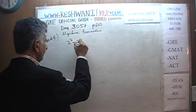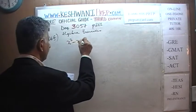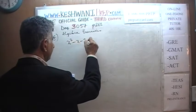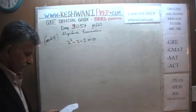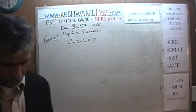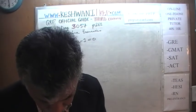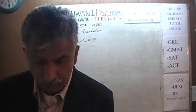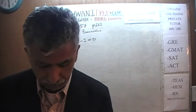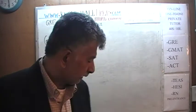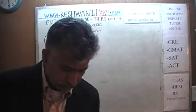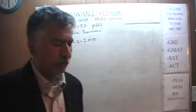Here is what is given to us: x squared minus x plus 1 is equal to 0. Our job is to find the solutions to this problem — it says solve the given equation for x, find the solutions, two of them. It is a quadratic equation and it is going to have two solutions.